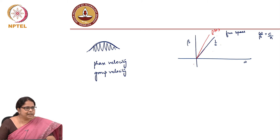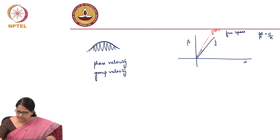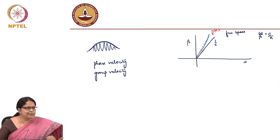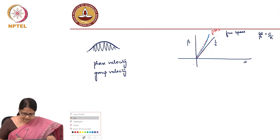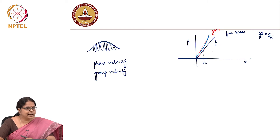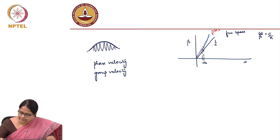But if n itself is a function of frequency, the line does not remain a line — it becomes a curve. You will always have some curve. You are operating at a specific omega naught with a spread delta omega.